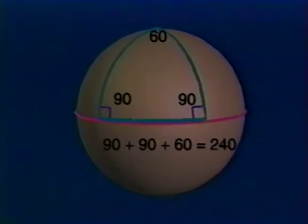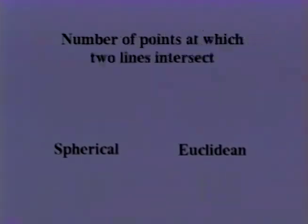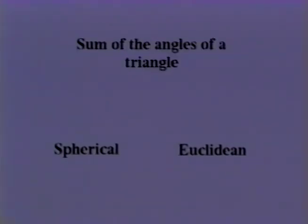The number of lines through point P, which are parallel to L, in spherical geometry is 0. In Euclidean geometry, it is 1. The number of points at which two lines intersect. In spherical geometry, it was 2. In Euclidean geometry, it is 0 or 1. The sum of the angles of a triangle. In spherical geometry, it is greater than 180 degrees. In Euclidean geometry, it is equal to 180 degrees.